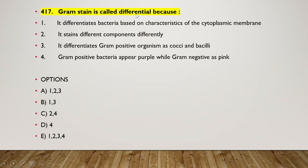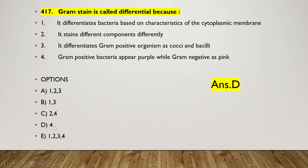Next question: Gram stain is called differential because — (1) it differentiates bacteria based on characteristics of the cytoplasmic membrane, (2) it stains different components differently, (3) it differentiates Gram-positive organisms as cocci and bacilli, (4) Gram-positive bacteria appear purple while Gram-negative appear pink. The right answer is option D — only four is the right answer.